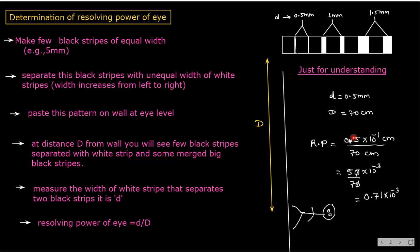For example, if small d is 0.5 mm, that is 0.5 × 10⁻¹ cm, and the distance is 70 cm, then resolving power equals 0.5 × 10⁻¹ divided by 70, giving approximately 0.7 × 10⁻³. This is just an example. If these three strips merge into one — say the white strip width is one millimeter — then your small d is 1 mm. Divide by capital D and you get the resolving power of your eye.